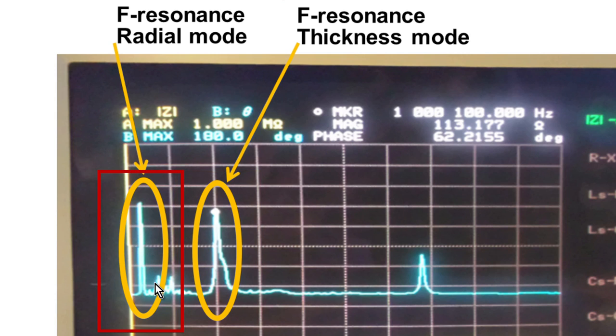Radial resonance is in the radial direction and not useful for this application. Our application here needs resonance in the axial mode. This is also referred to as the thickness mode on some specifications.